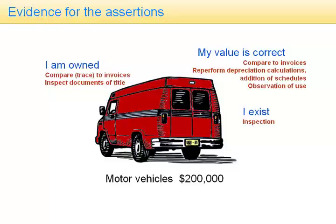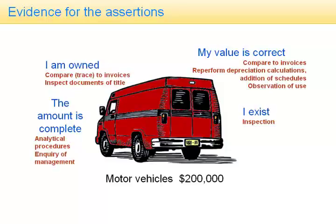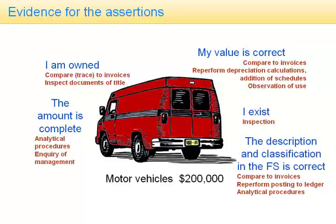To test existence, we can go and inspect them. To test that the amount is complete, we can use analytical procedures — if last year's motor vehicles were at $300,000 and this year $200,000, one thing you should worry about is that some have been left out. We can inquire of management: ask management whether all the motor vehicles are included in the financial statements. And finally, we have to make sure that the description and classification in the financial statements is supported by evidence — compare to invoices to ensure computer equipment isn't debited into the motor vehicles account. Analytical procedures could also help, since you don't normally expect fixed assets to go up and down very markedly.